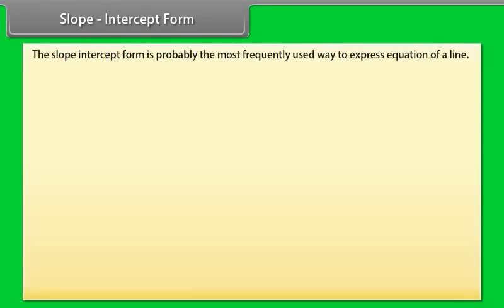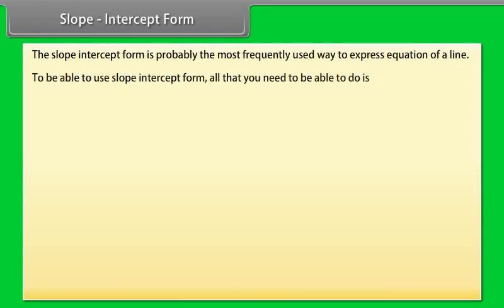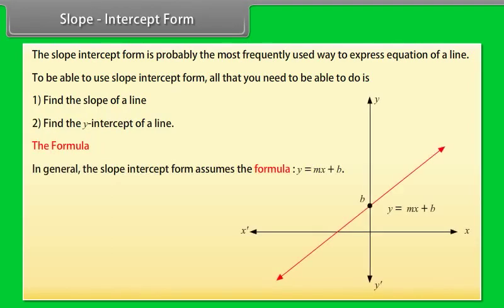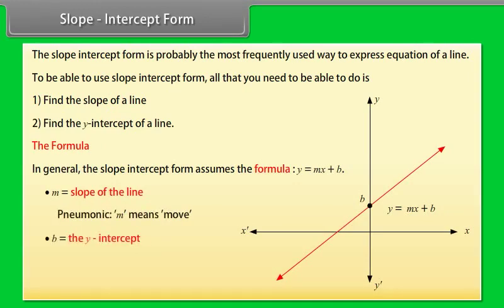Slope-intercept form is probably the most frequently used way to express the equation of a line. To use slope-intercept form, all you need to do is find the slope of a line and find the y-intercept of a line. In general, the slope-intercept form assumes the formula y = mx + b, where m is the slope of the line and b is the y-intercept.